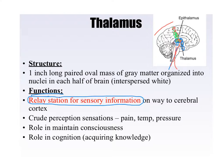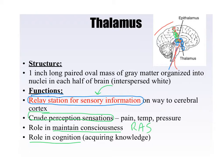We're going to go over the somatosensory cortex and also the primary motor cortex later on. The thalamus does have some other functions, but the relay station function is the one you definitely want in your notes — underline it, highlight it. It does have crude perception of things like pain, temperature, and pressure. It has a role in maintaining consciousness, kind of like the RAS, the reticular activating system. It does play a role in cognition — acquiring knowledge — but the main thing is: it's a relay station for sensory information.